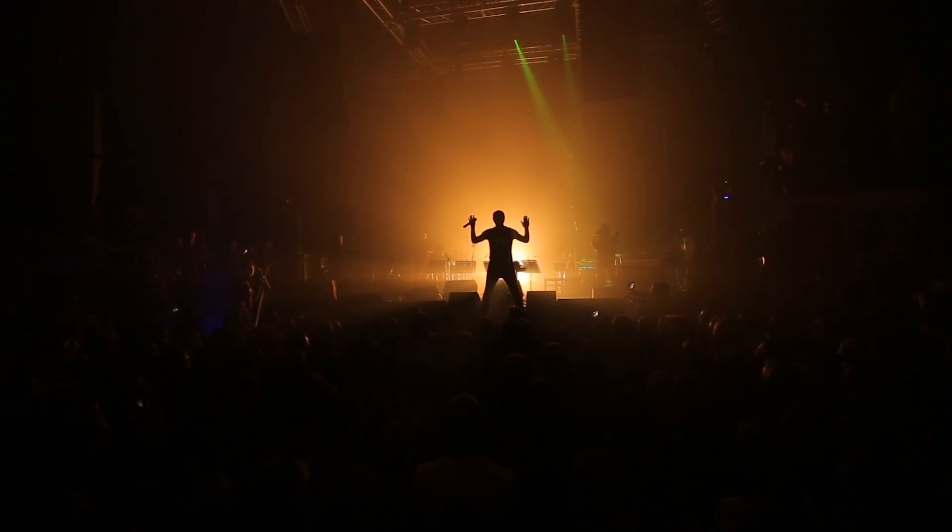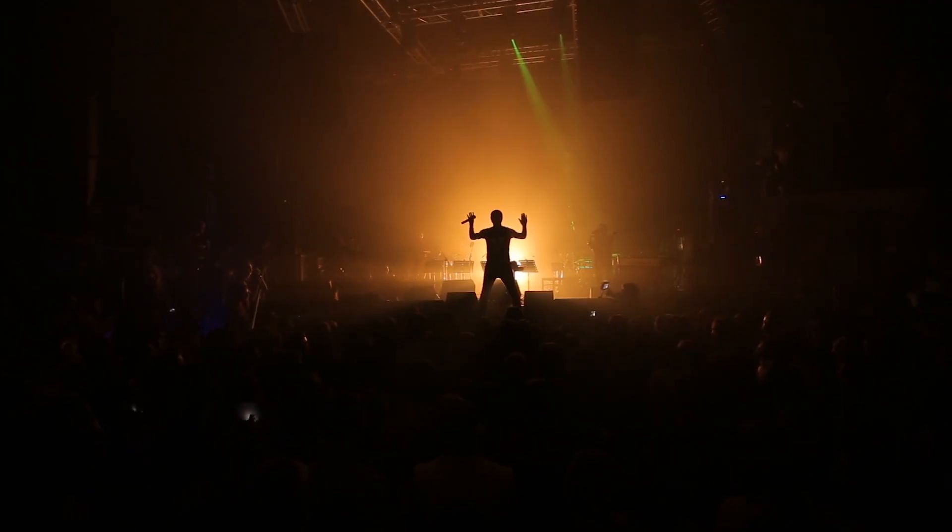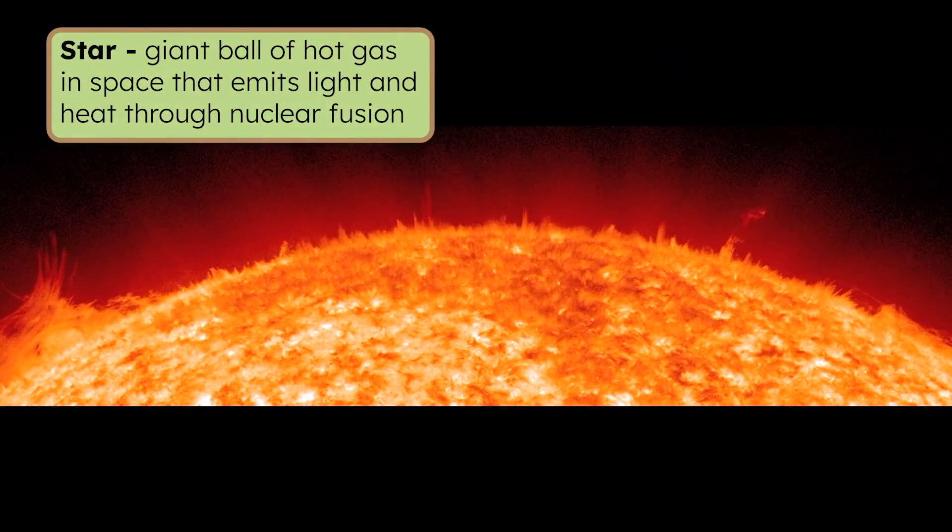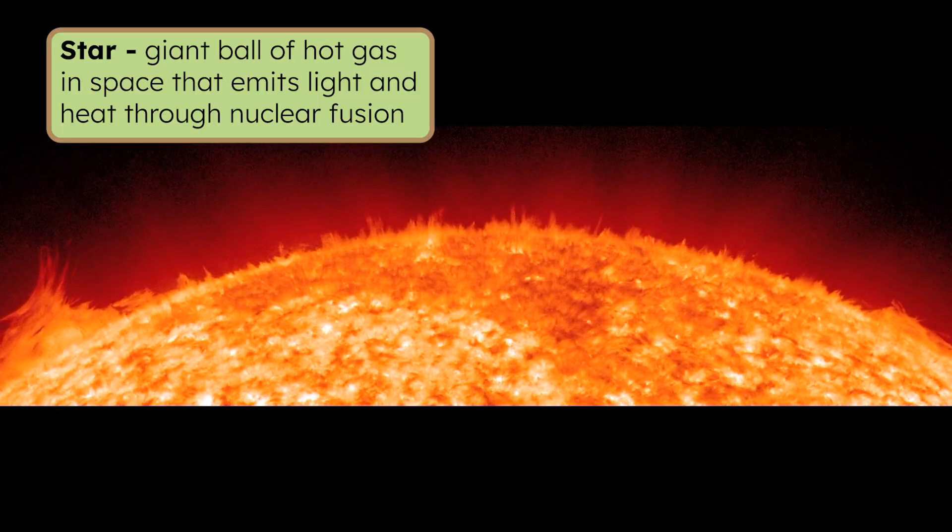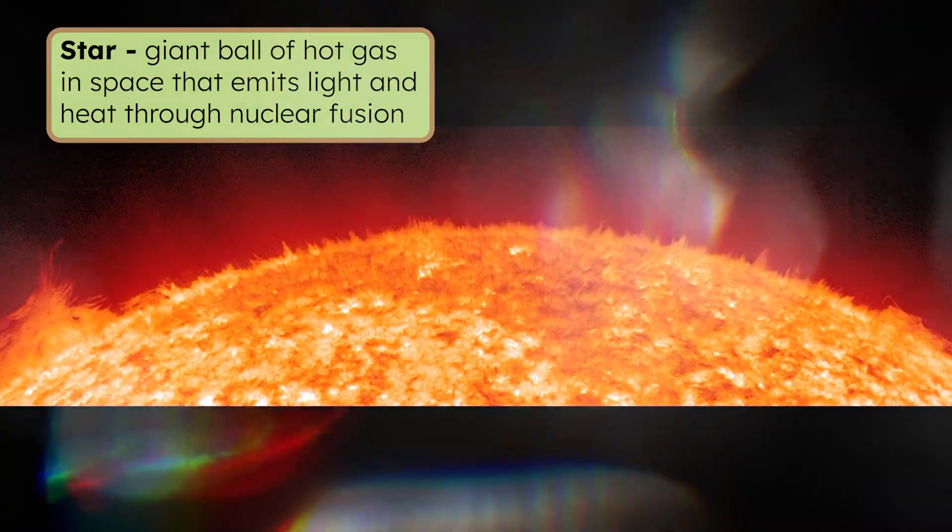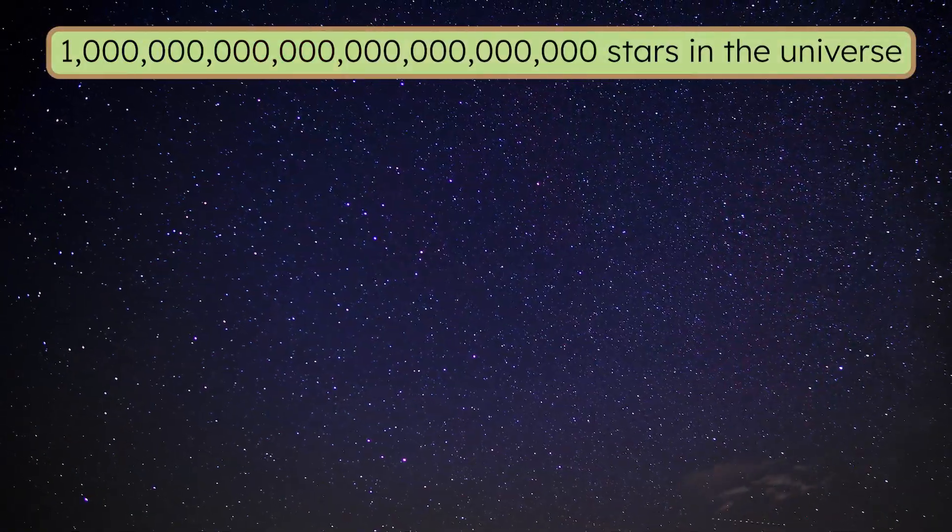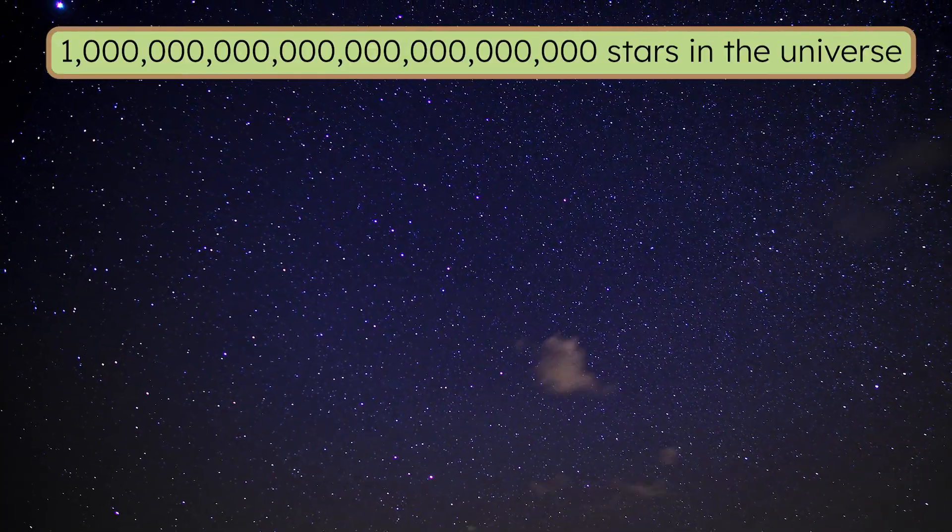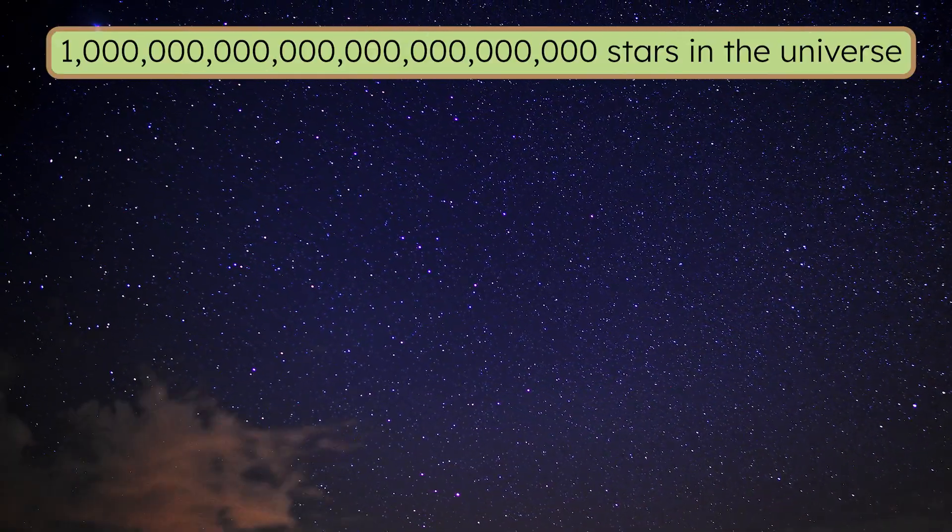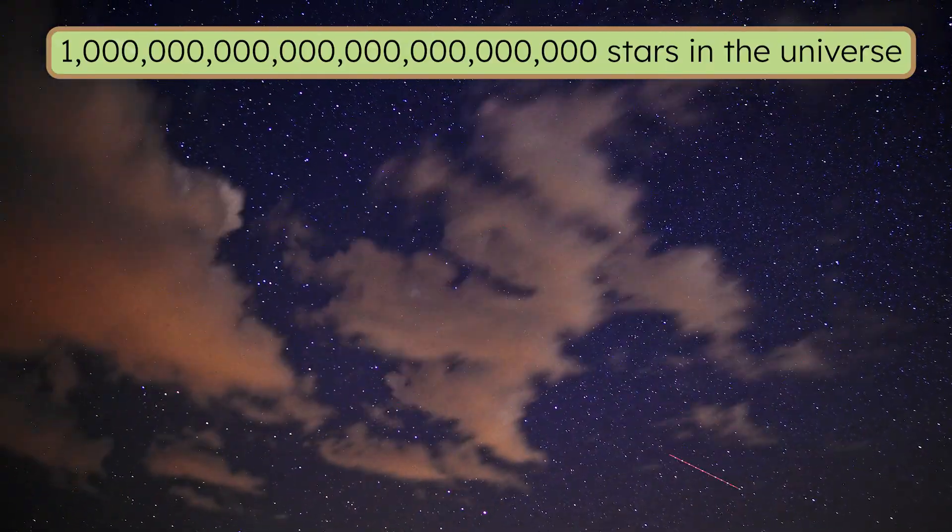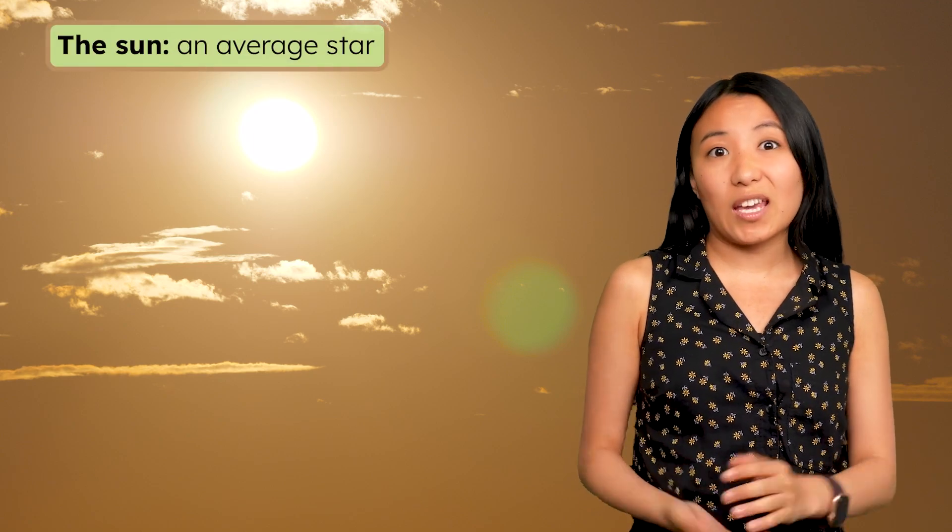But what does it take to be considered a star? While our culture may have a different definition, scientifically, a star is a giant ball of hot gas in space that emits light and heat through nuclear fusion. And scientists estimate that there are around one septillion stars in our universe, our sun representing just one of them. While the sun might feel like a pretty big deal to us, in stellar terms, it's actually pretty average.